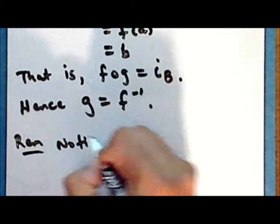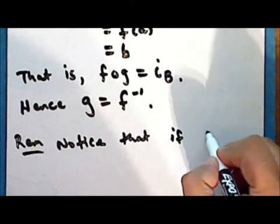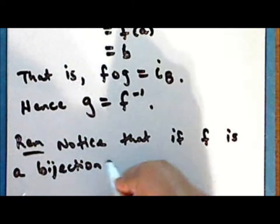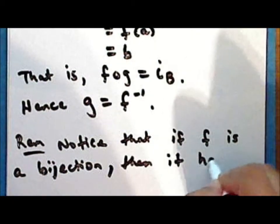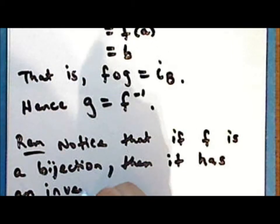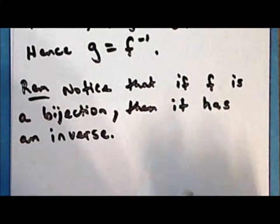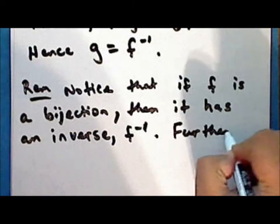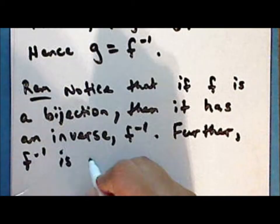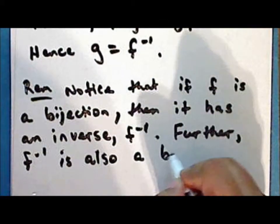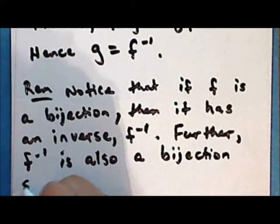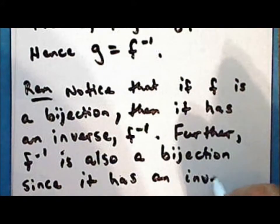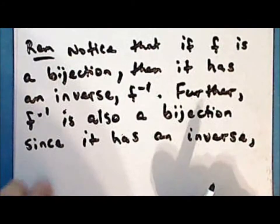Notice that if the function F is a bijection, then it has an inverse, which we denote F inverse. Further, F inverse is also a bijection, since it has an inverse, namely the original function F.